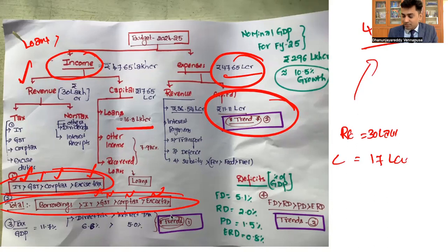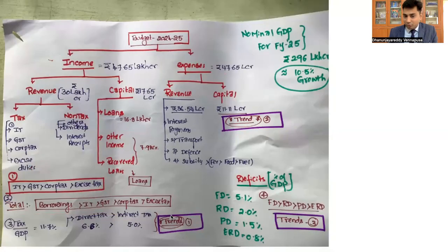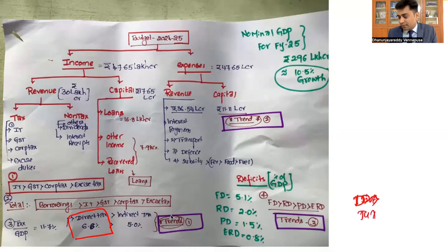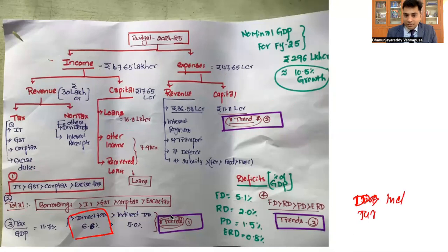We have two types of taxes: direct taxes and indirect taxes. The next question is which tax is more for the government — direct or indirect. It is direct taxes which are more for the government than indirect taxes. Contribution through direct taxes is 6.8% of GDP, whereas indirect taxes contribute 5.8% of GDP.